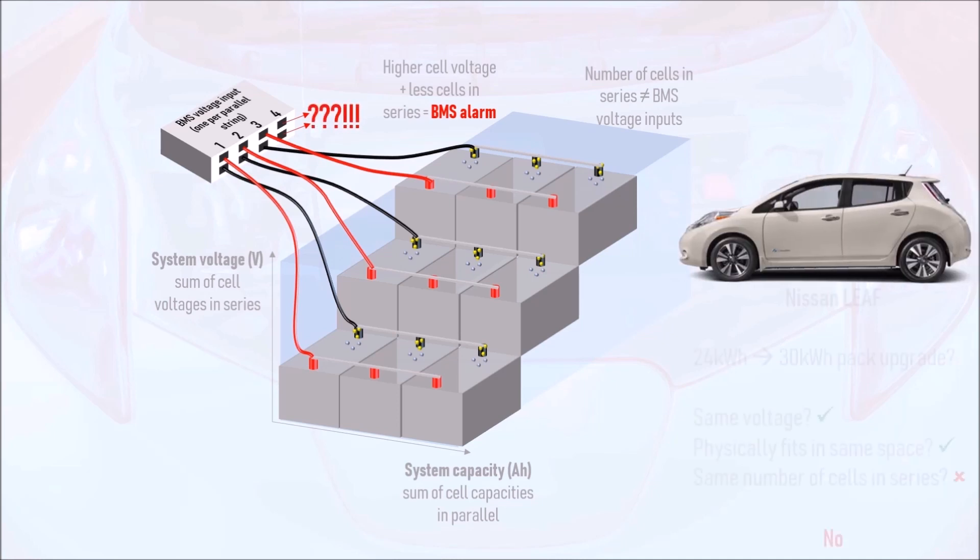On a similar note, the 24kWh Nissan Leaf cannot be upgraded to a 30kWh battery pack because, despite having similar cell chemistries and, consequently, similar cell voltages and step heights, the battery module configurations are different. The 24kWh Leaf has modules containing two cells in series and two in parallel, whilst the 30kWh model has four cells in series and two in parallel, so the BMS voltage sense connections are incompatible.